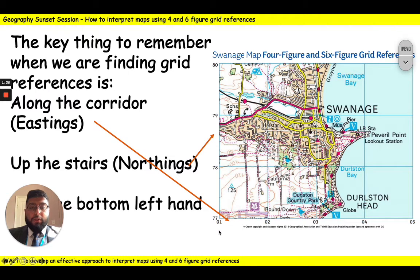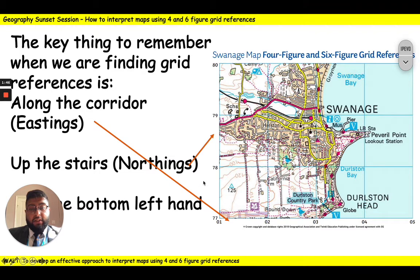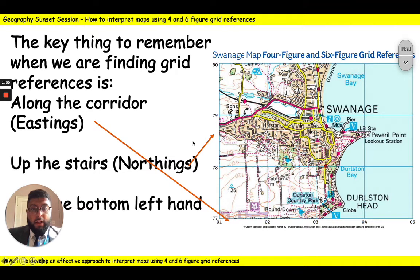So once we've found out whether our grid reference is going to start with 01, 02, 03, 04 etc., we then need to find out if it's going to end in 77, 78, 79. So we go along the corridor and up the stairs.